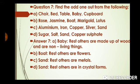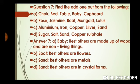Question number seven: Find the odd one out from the following. A: Chair, bed, table, baby, cupboard — odd one is baby, क्योंकि बाकी सभी wooden objects हैं. B: Rose, jasmine, board, marigold, lotus — odd one is board, क्योंकि सभी flowers हैं. C: Aluminium, iron, copper, silver, sand — odd one is sand, क्योंकि aluminium, iron, copper, silver ये सारे metals हैं, but sand is different. D: Sugar, salt, sand, copper sulfate — odd one is sand.